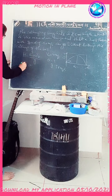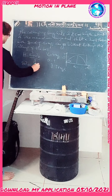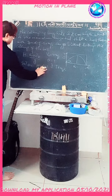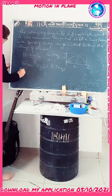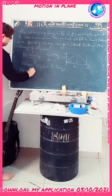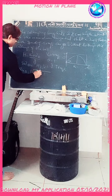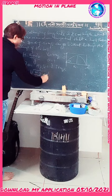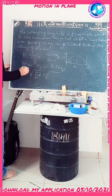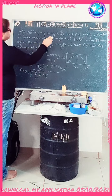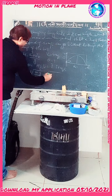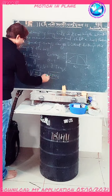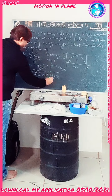The maximum height h is equal to V₀² sin²θ divided by g. Therefore, sin²θ is equal to h × g divided by V². Therefore, sin θ is equal to the square root of (h × g divided by V²). Substituting the values: square root of (25 × 9.8 divided by 40²).